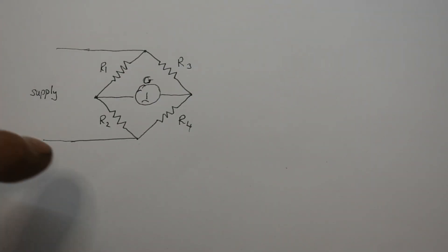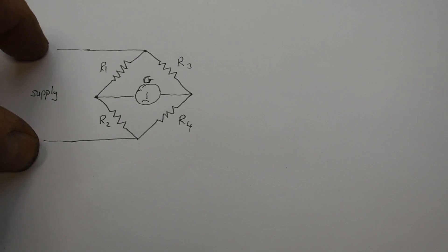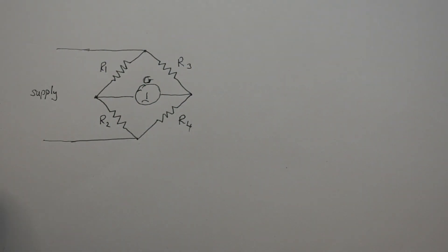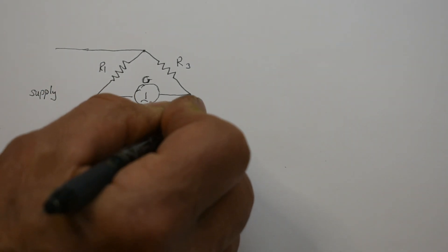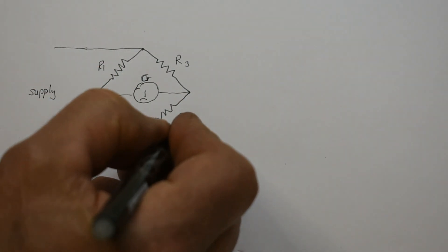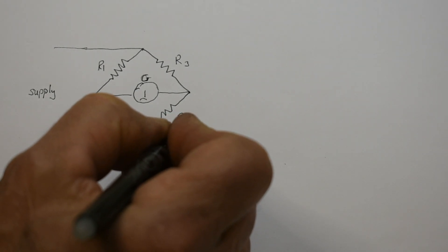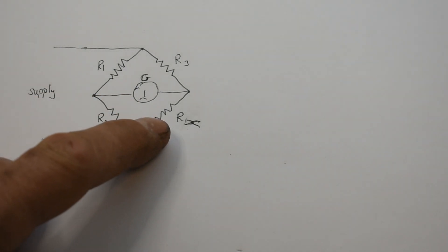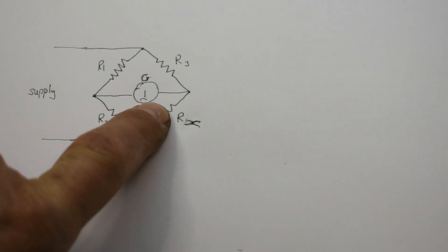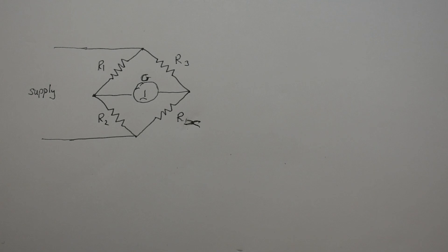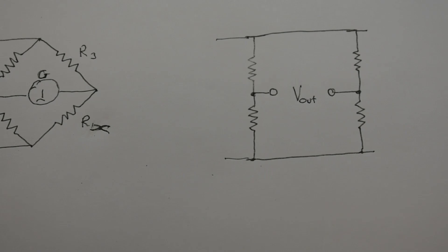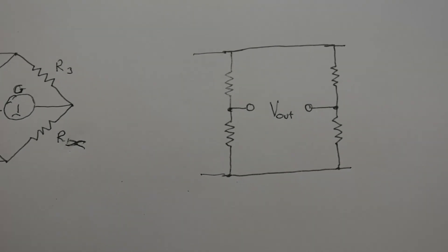Wheatstone bridges are generally drawn like this where we have a supply here and our four resistors around here, and one of these resistors will be an unknown. Let's try this one. This is our unknown resistance, our X. And we have a galvanometer in the center here. A galvanometer is just measuring a plus and minus current or voltage here. It's a little bit simpler if we draw it slightly differently. Everything becomes a little bit more apparent when you look at this diagram.